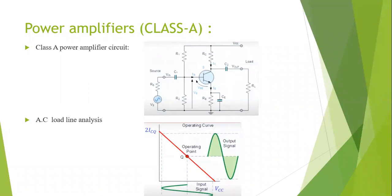As we can see on screen, the AC load line in the class A amplifier is very important. We have to choose the operating point at the center of the AC load line, because the output signal swings and uses the entire load line — the positive peak and the negative peak of the output signal occupy almost the entire area of the load line. So it is very important to choose the operating point at the center.